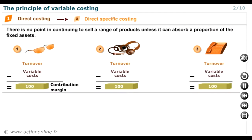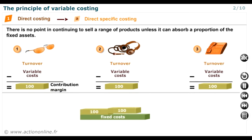The reasoning is as follows. There is no point in continuing to sell a range of products unless it can absorb a proportion of the fixed costs. Where the company has several business units, selling products from units with a positive contribution margin contributes to covering fixed costs, and consequently contributes to making a profit.